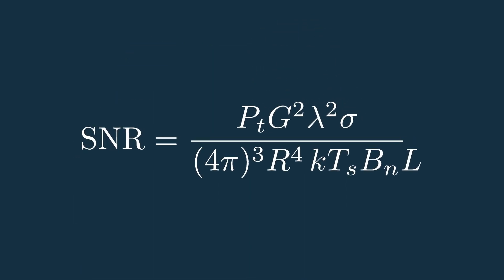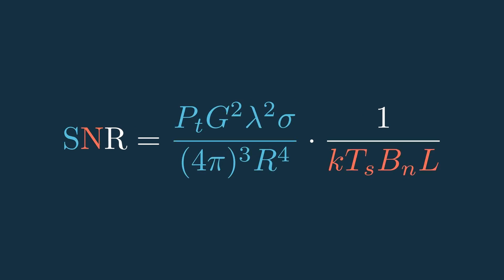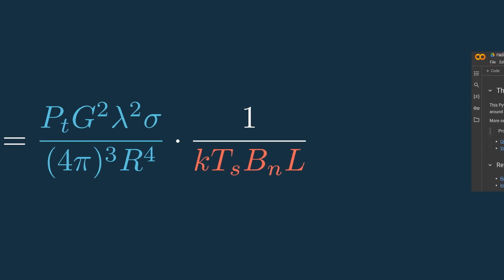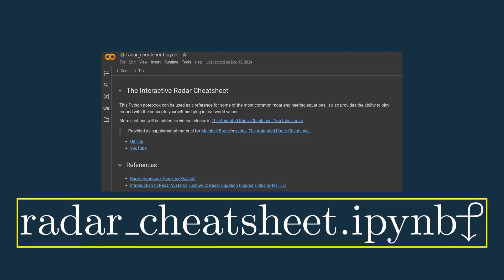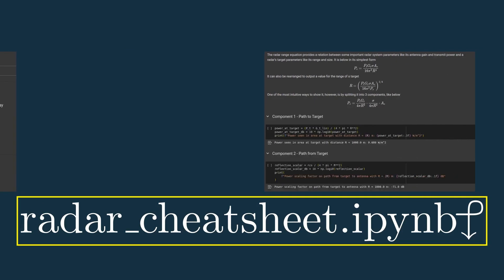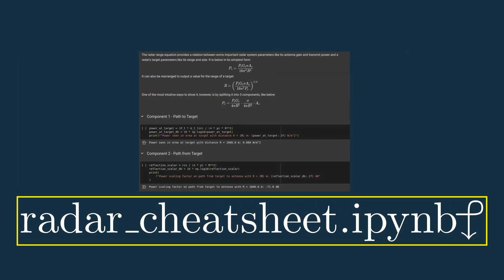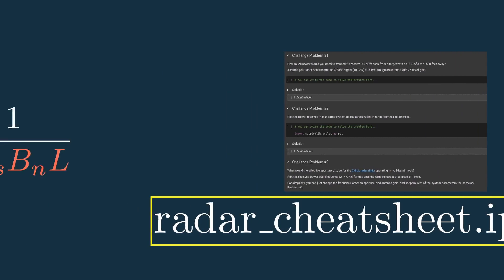This equation can be split into two main components: the signal and the noise. Before we get into that though, if you'd like to follow along and play with these equations yourself, check out the interactive radar cheat sheet in the description, which is a Python notebook where you can use the equations with example systems and solve challenge problems.